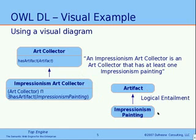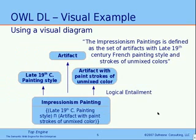Also, Impressionist painting was defined as the conjunction of two classes: the late 19th century painting style class and artifacts with paint stroke of unmixed color. It logically follows that the Impressionist painting class must be a subclass of all three of those classes in order for all of the axioms to be true at the same time. So we see that when we express classes with class expressions that have very clear semantic meaning, we can deduce the type hierarchy, or the class-subclass relationship, of the domain model in order to have the class axioms remain valid based on description logic.